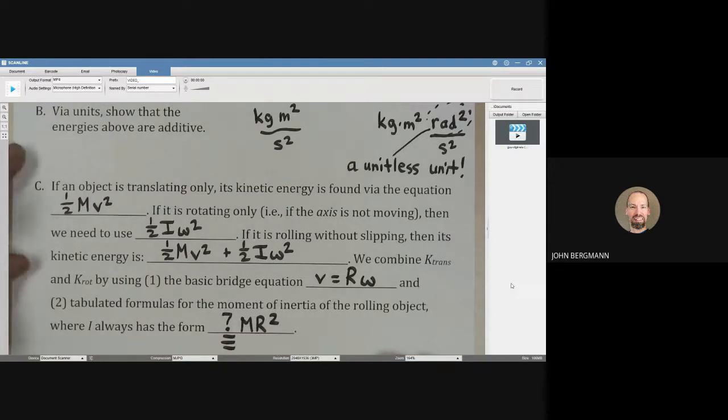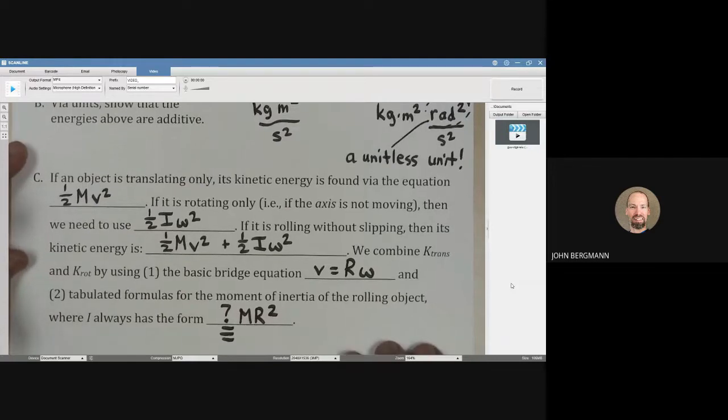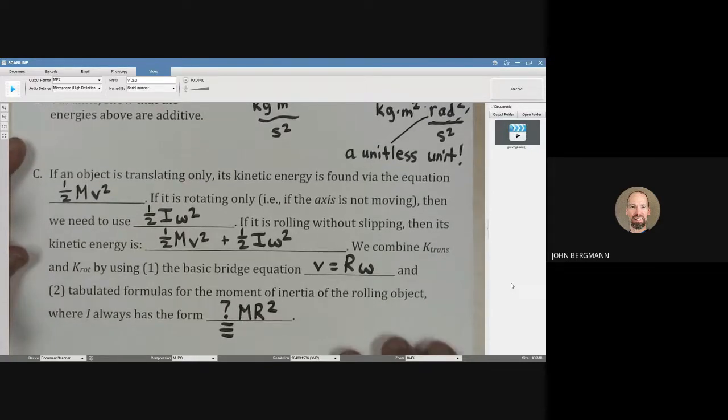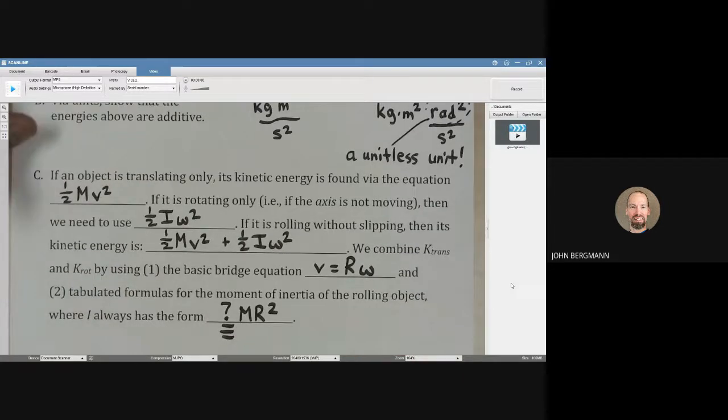And they're always of the form they have some constant and then mr squared. So it depends if it's a solid sphere, a hollow sphere, a hoop, a solid cylinder, or whatever. But it's always going to be some fraction multiplied by mr squared.